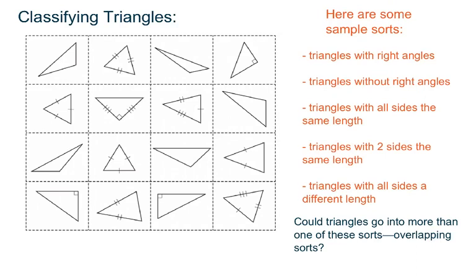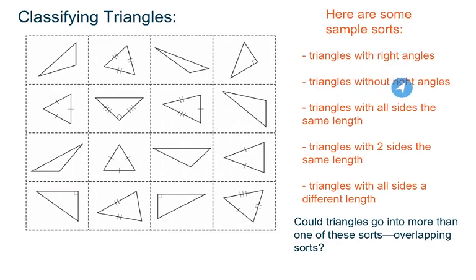Here are some of the sample sorts that I came up with. We could put triangles that have right angles in a group — you can see this one, this one, this one, and this one, anytime they have the little right angle symbol. Those would all be in that subcategory. Or I could do triangles without right angles and then do all of the other ones that don't have the right angle symbol.